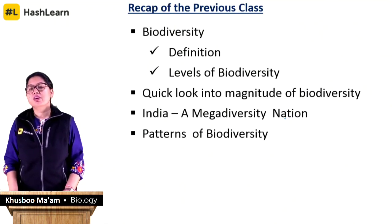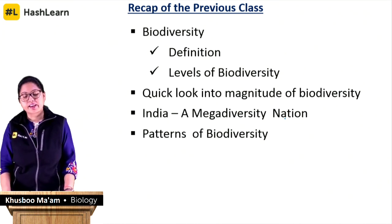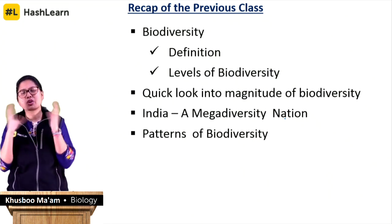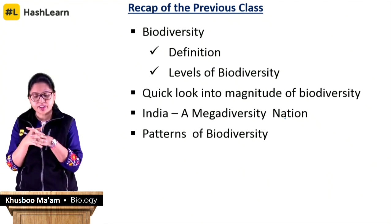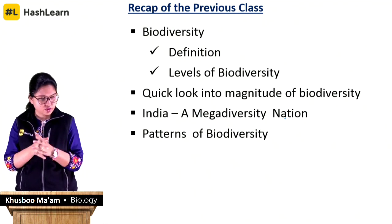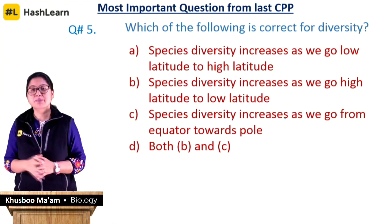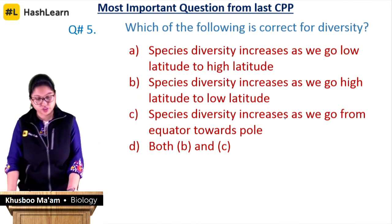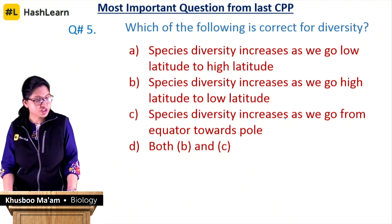In the last class we talked about what is biodiversity and the different levels like alpha, beta, and gamma diversity, how diverse our nature is, and we realized that biodiversity is significant. We also looked into various patterns of biodiversity, based on which the CPP — the class practice pack — was given to you.